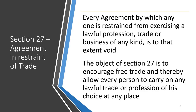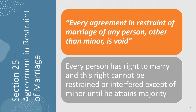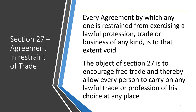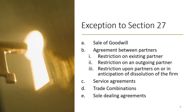Section 27 — agreement in restraint of trade: every agreement by which anyone is restrained from exercising a lawful profession, trade, or business of any kind is to that extent void. People have a fundamental right to choose their profession. The object of Section 27 is to encourage free trade and allow every person to carry on any lawful trade or profession of their choice at any place.